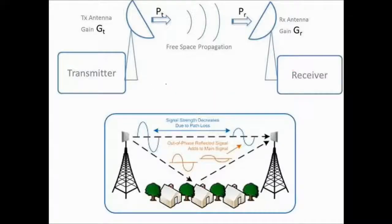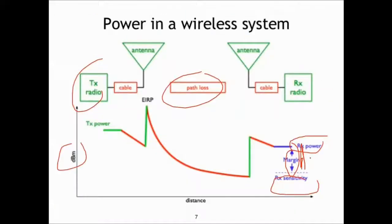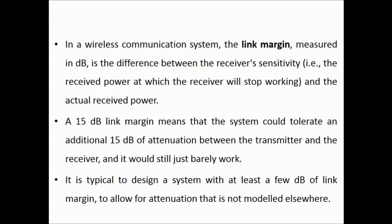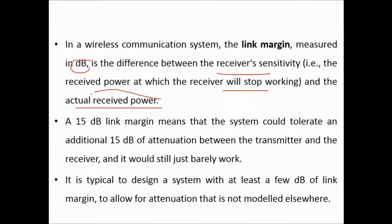Let us talk about link budget. As you see, this is a transmitter and this is the receiver. When the transmitter transmits and the receiver receives, the link margin — measured in dB — is the difference between the receiver sensitivity, which is the received power at which the receiver will stop working, and the actual received power.